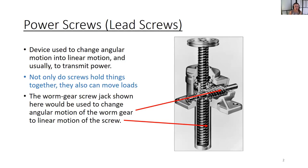The worm gear screw jack shown here would be used to change the angular motion of the worm gear to the linear motion of the screw, and you can imagine there would be something resting on this platform that is what you want to lift up.